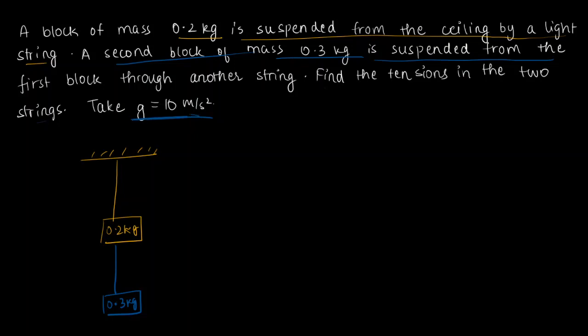Now let's analyze what are the forces acting here. So on this first rope let's take the tension to be T1. And on the second rope let's take the tension to be T2.